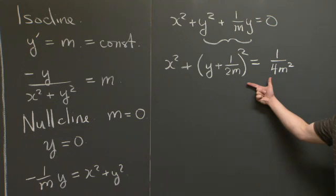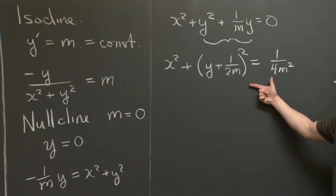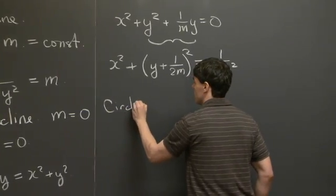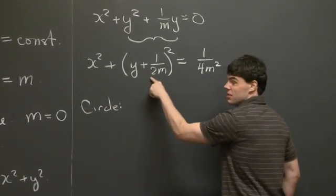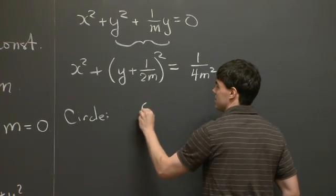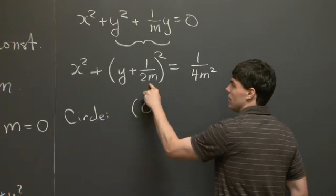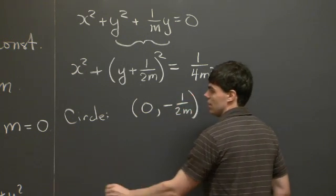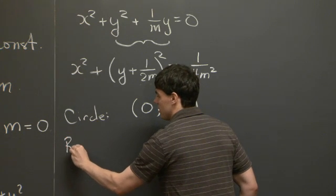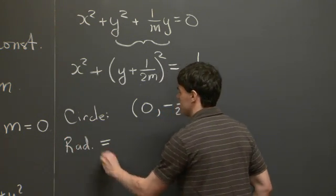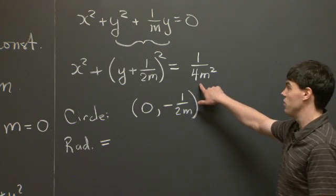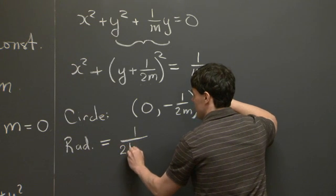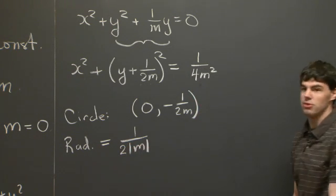And we recognize this equation as the equation for a circle. Specifically, it's a circle that's centered at x equals 0, and y equals negative 1 over 2m. And in addition, the circle has a radius. Because r squared is equal to 1 over 4m squared, which means its radius is 1 over 2 times the absolute value of m.